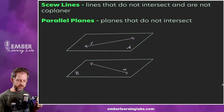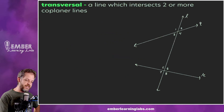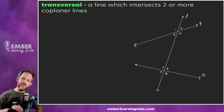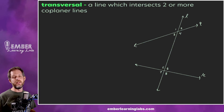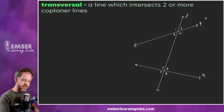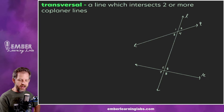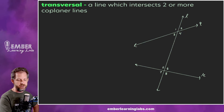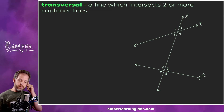The title of this lesson is parallel lines and transversals, so what is a transversal? A transversal is a line that intersects two or more coplanar lines. So we've got line Q and line R, which are coplanar, and then we've got transversal L which intersects both of those lines. In this case, L is an example of a transversal.